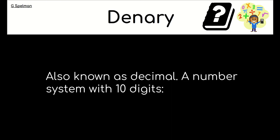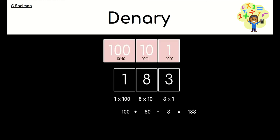So denary, what is denary? Well, denary is just a number system with 10 digits. It's the number system that you are used to, it's decimal. It's got the digits zero all the way up to nine. How would we explain denary? Let's take the number 183. The 1 means 100, the 8 is 8 tens, and the 3 is 3 ones. We add those all together and that gives us 183.